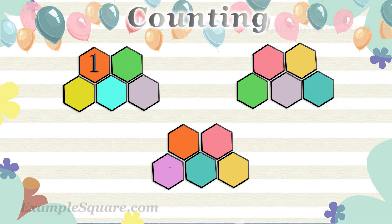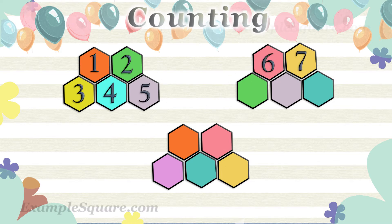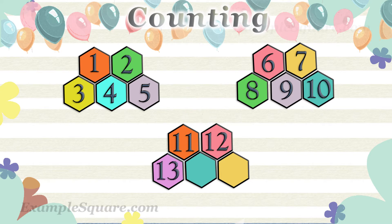1, 2, 3, 4, 5, 6, 7, 8, 9, 10, 11, 12, 13, 14, 15. There are 15 hexagon shapes.